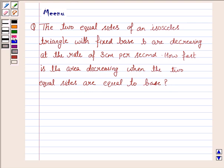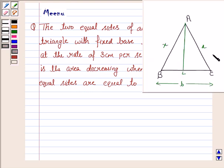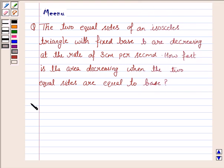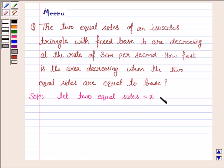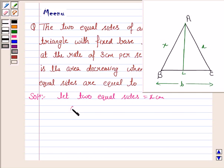We are given that the sides of an isosceles triangle are decreasing at the rate of 3 cm per second, and we have to find the corresponding decrease in the area when the two equal sides become equal to the base. Let the two equal sides be equal to x cm, that is AB = AC = x cm, and let BC be the base equal to B, and AL be the altitude.